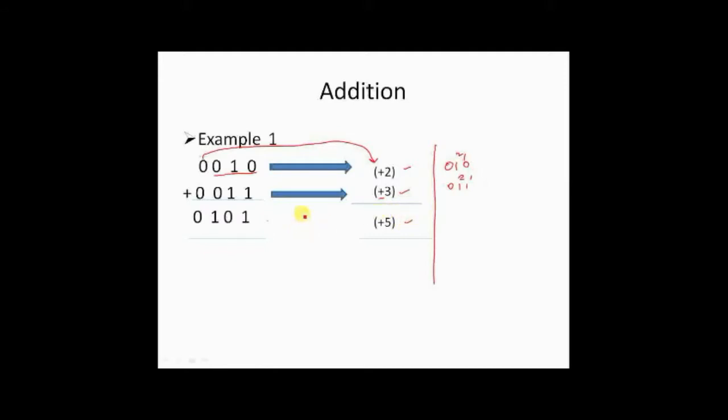So when we apply the rule, 0 plus 1 is 1, 1 plus 1 is 0 carry 1, carry 1 plus 0 plus 0 equals 1, and 0 plus 0. So we got 0101. So this 0 indicates it is plus and 101 indicates 1, 2, 4, that is equal to 5. So our answer is correct.